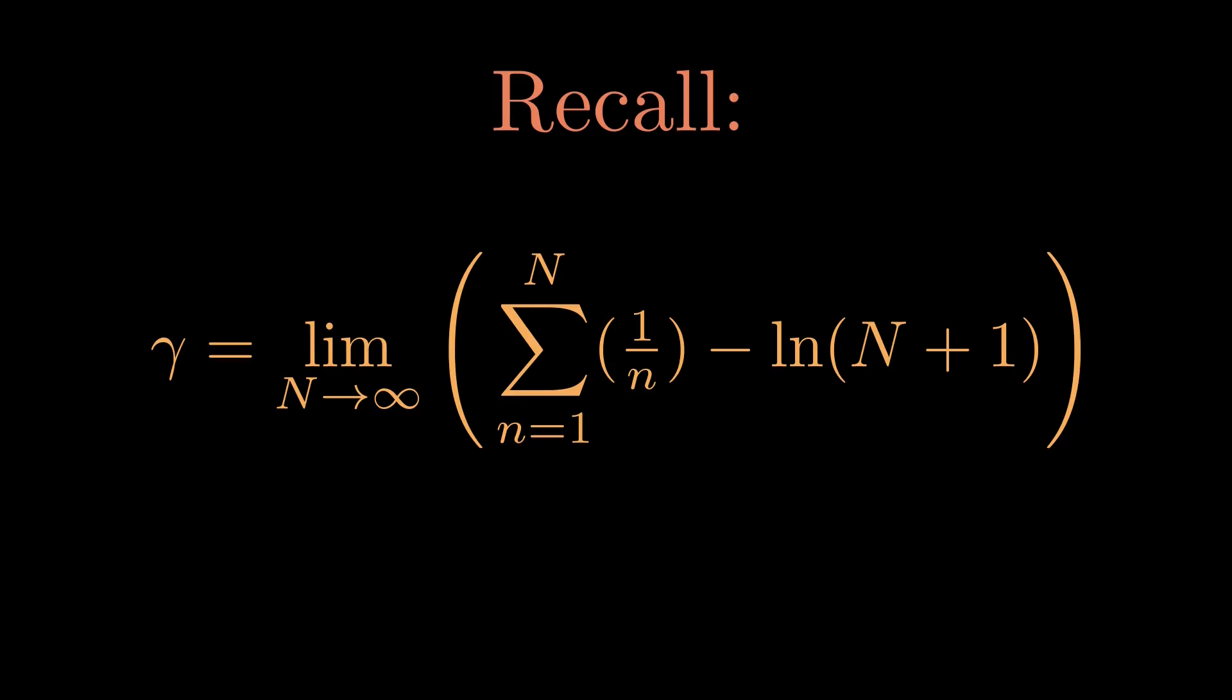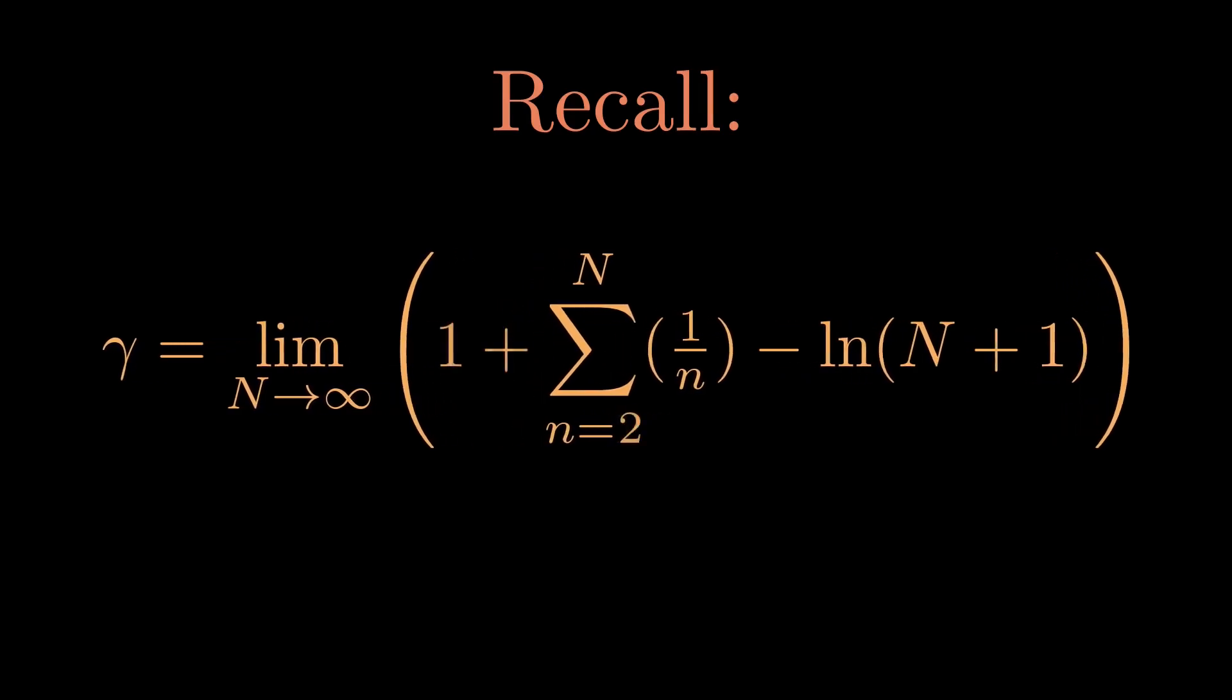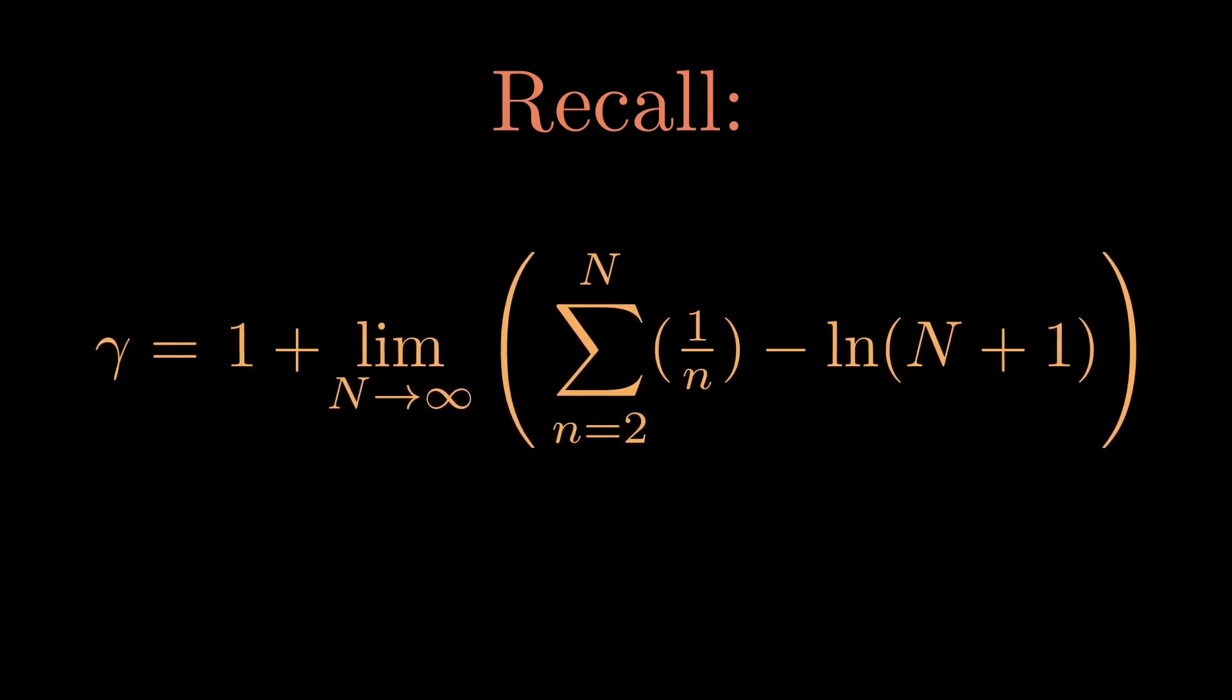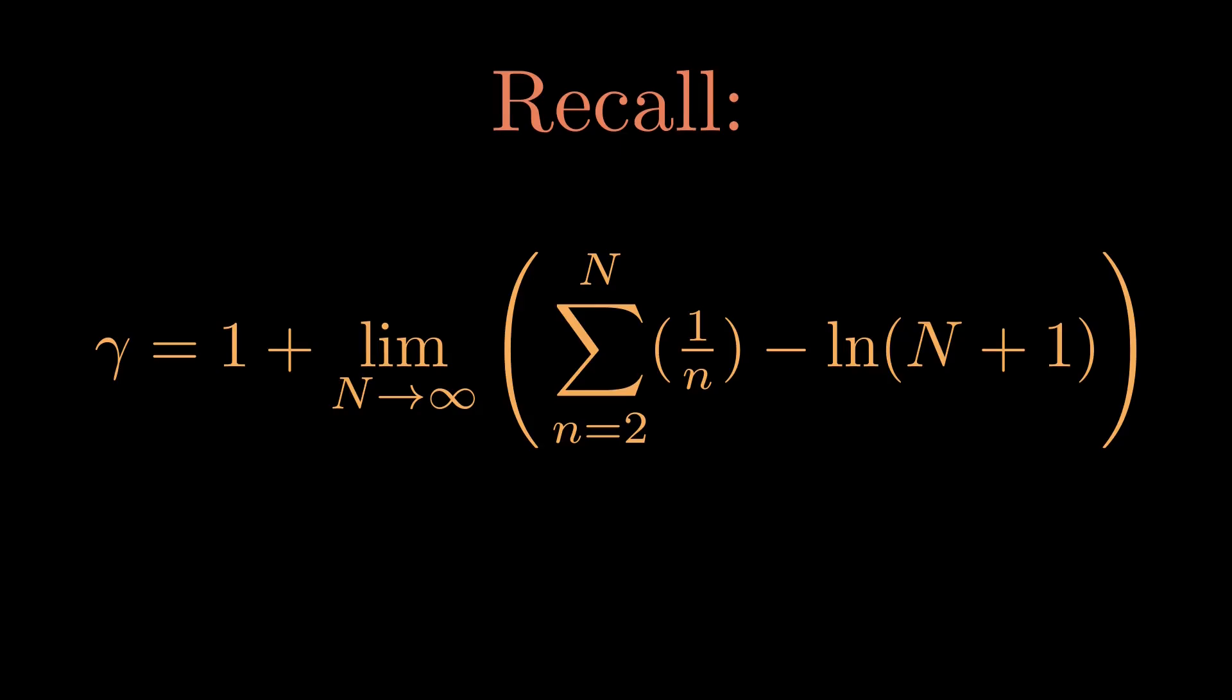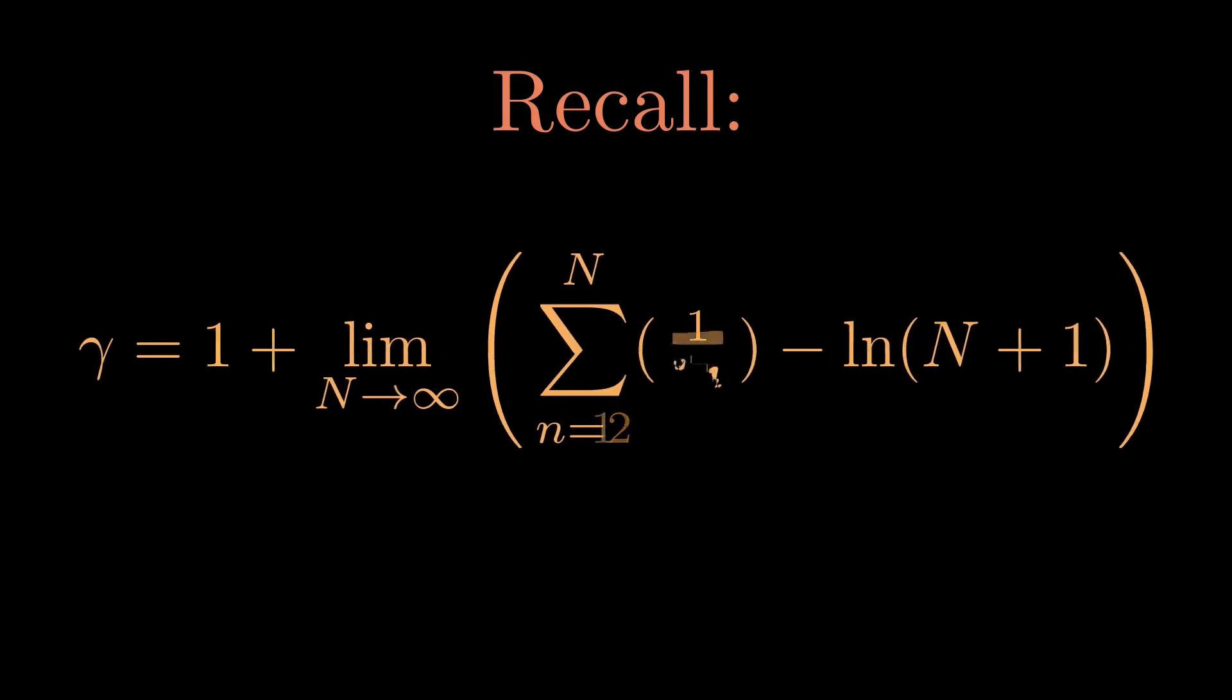Now we're going to do something strange with this sum. This will help us in connecting it to the work we've been doing. We will take the first term out of the sum and out of the limit. This gives us 1 plus the limit as n goes to infinity of the sum from n equals 2 to n of 1 over n. We will also re-index the sum so we're starting at n equals 1.